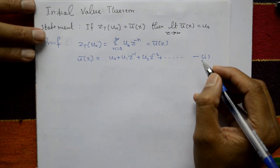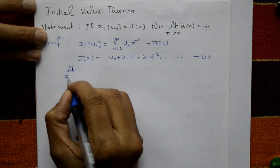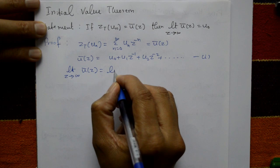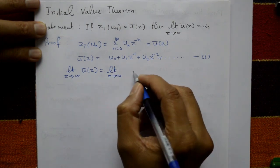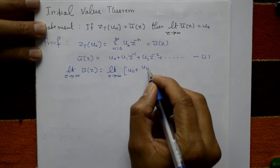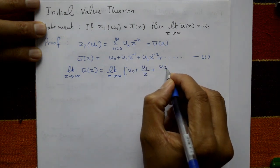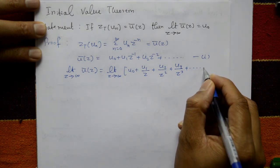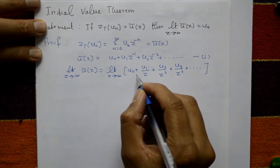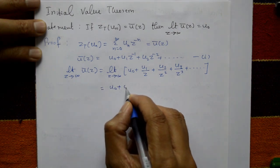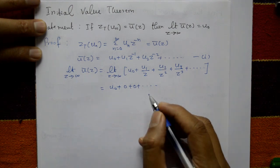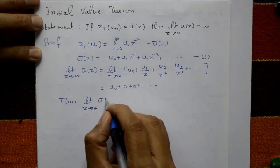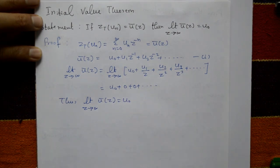Now taking the limit as z tends to infinity on both sides of U̅(z): the limit equals u₀ plus u₁ times one over z plus u₂ over z² plus u₃ over z³ plus so on. Applying the limit as z tends to infinity gives u₀ plus zero plus zero plus zero plus zero and so on. Thus, the limit as z tends to infinity of U̅(z) equals u₀. Very simple.